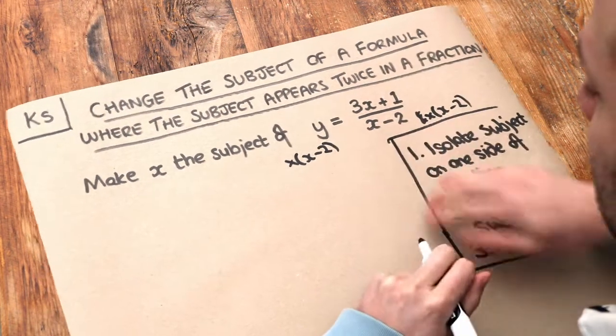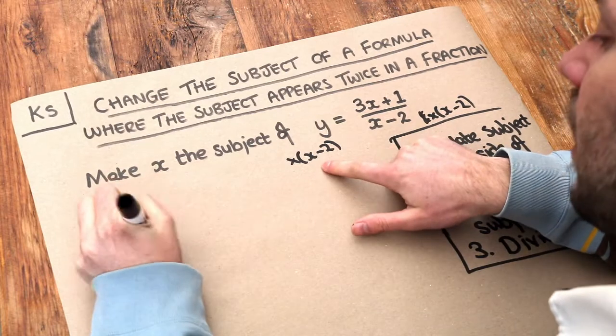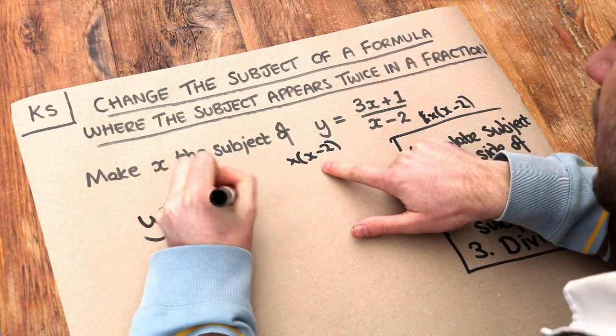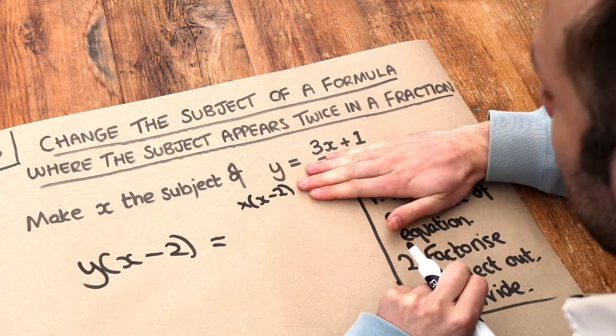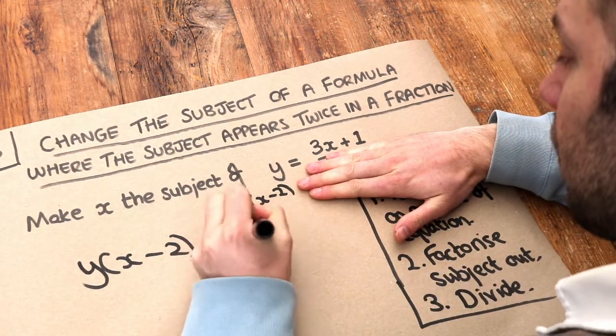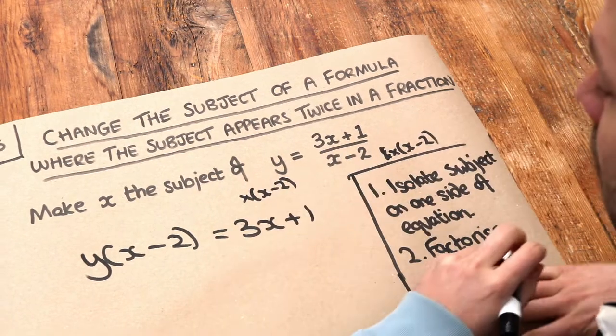So if we do that, the left-hand side becomes y times x minus 2. I'll expand out in a second. And if we multiply the right-hand side by x minus 2, it gets rid of this over x minus 2, giving you just 3x plus 1. So we've dealt with the fraction.